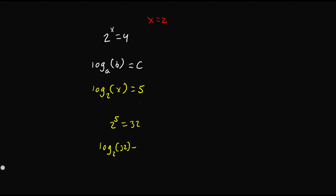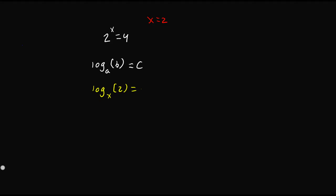But what if you have x on the outside, such as log base x of 2 is equal to 1? What we want to do is take x to the power of 1, which gives us 2 is equal to x to the power of 1. Now you have to solve for x, and in this example x to the power of 1 is x, so we get x is equal to 2.